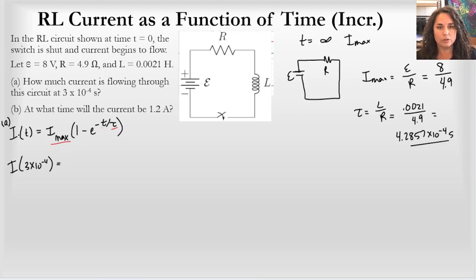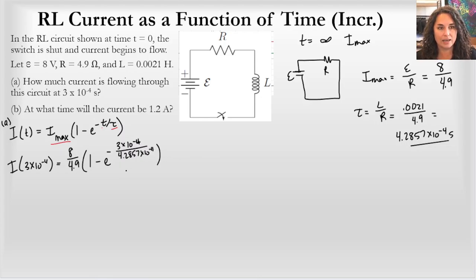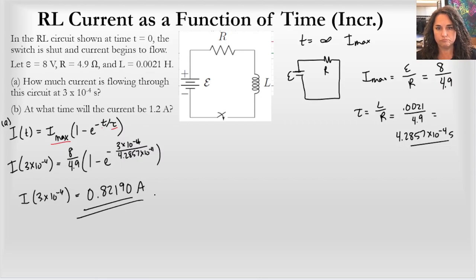For part A, I'm ready to plug in. I(3 × 10⁻⁴) = (8 / 4.9) · (1 − e^(−(3 × 10⁻⁴) / (4.2857 × 10⁻⁴))). The exponent is dimensionless. Running that through the calculator gives I(3 × 10⁻⁴ s) = 0.82190 amps. Not too bad at all.